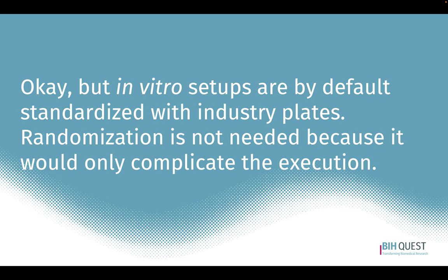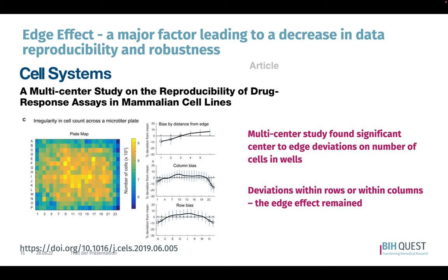You might say this applies to animal research but you only do in vitro setups with standardized plates, so you don't need to randomize. A large multi-center study showed that there is an edge effect that could be a major factor leading to decreased reproducibility and robustness. There is a center-to-edge deviation in cell number within wells, rows, and columns. We need to consider this in the design of how we put treatment conditions on a plate — we cannot just do this without thinking.